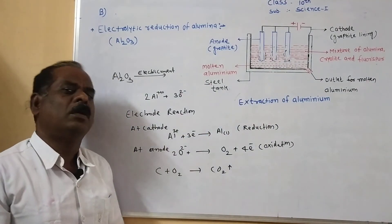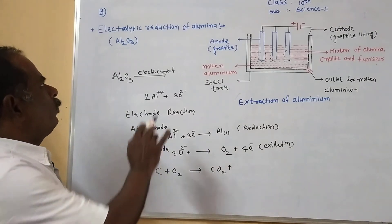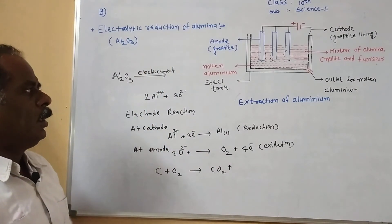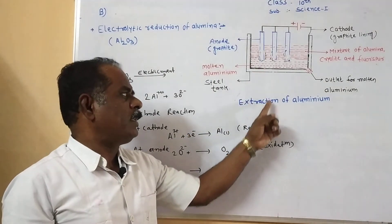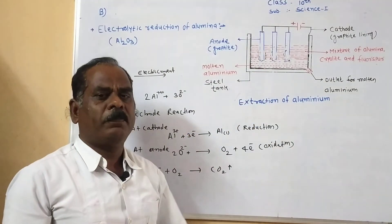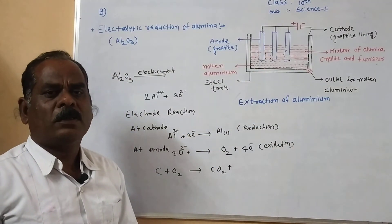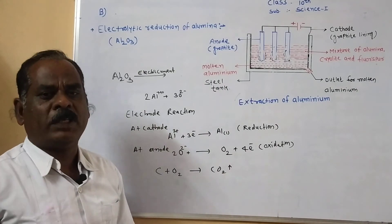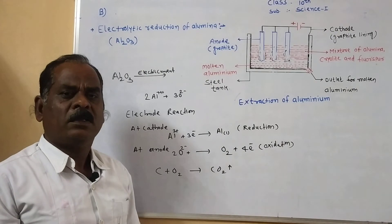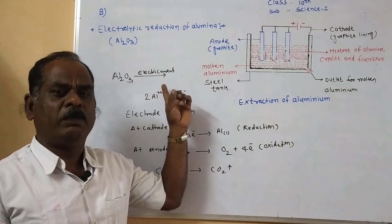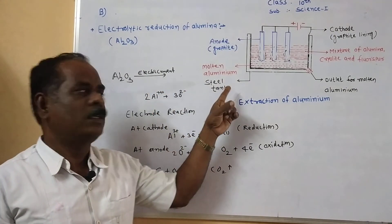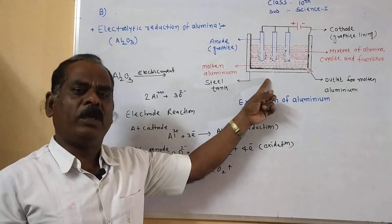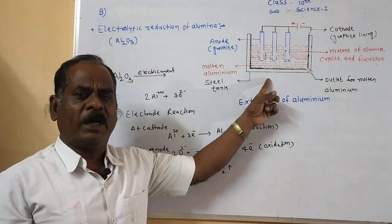For the examination, write short notes on electrolytic reduction of alumina, or draw the diagram of extraction of aluminium. For questions on extraction of aluminium from bauxite, write the concentration of bauxite by Bayer process or Hull process, then write the electrolytic reduction of aluminium and draw the diagram to get full marks. Thank you.